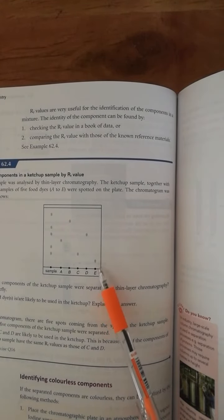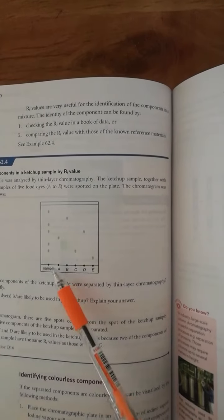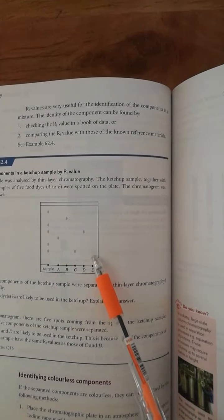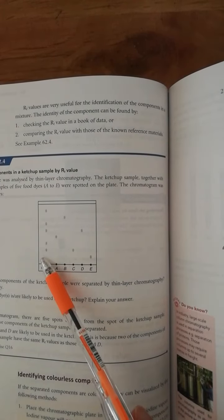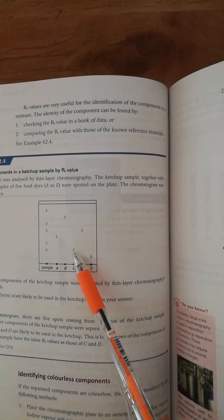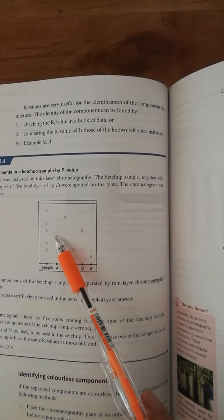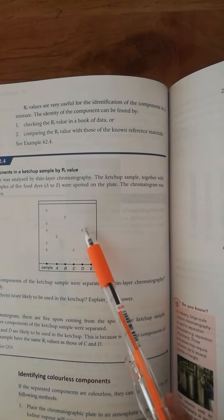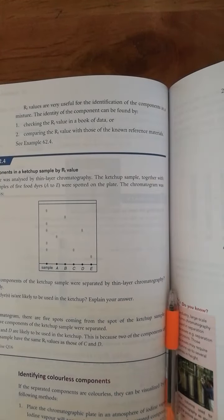And then it shows that the sample contains no E, because E should travel this distance. However, it shows that it contains C and A and B and D. In this way, you